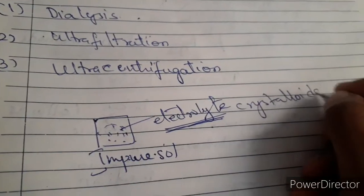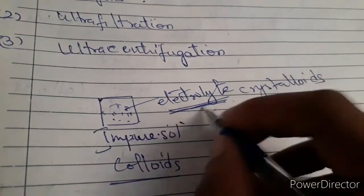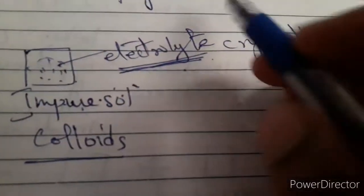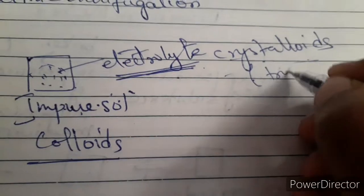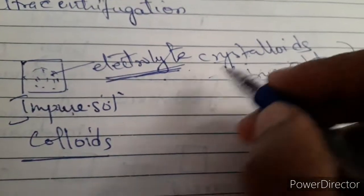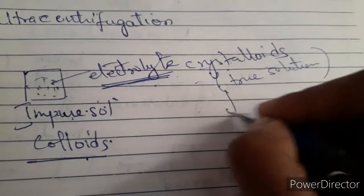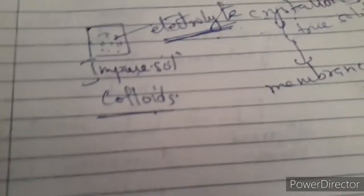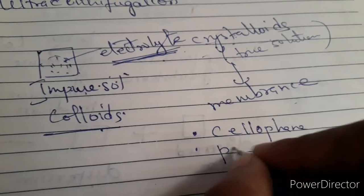So you have the colloidal solution, and the impurities are electrolytes — crystalloid particles. You want to remove the crystalloid particles. The colloidal solution is water-soluble, while these crystalloid particles form a true solution. So the true solution of crystalloid particles is removed from the impure colloidal solution by means of membranes. You can use suitable membranes — cellophane or parchment paper — it's your choice.